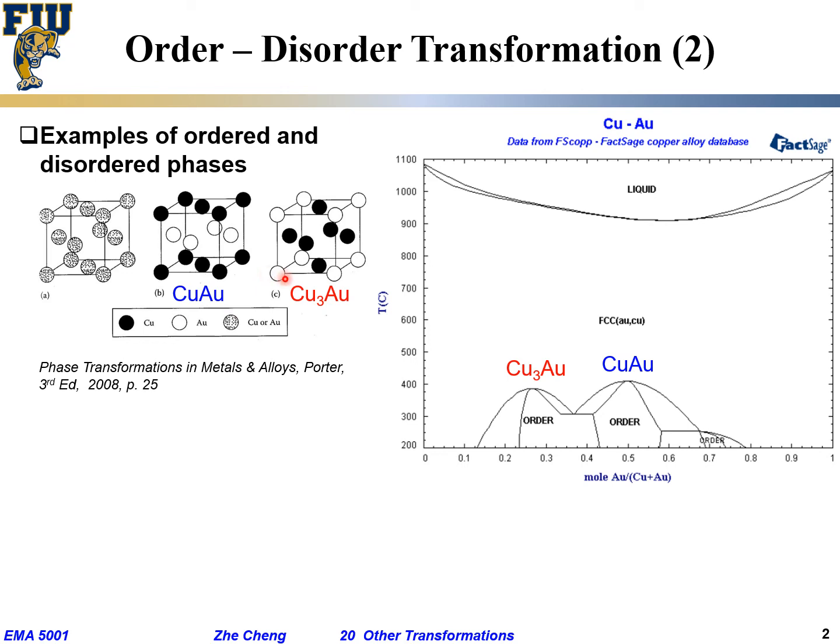Now for the other ordered phase - the copper prefers only at the face centers. There are six face centers, but each one I can count as half, so six times half gives me three copper. How many gold? I have eight, but each gold I can count as one-eighth (corner), so eight times one-eighth gives me one gold. So three-to-one ratio - this is Cu3Au.